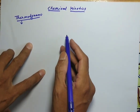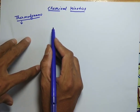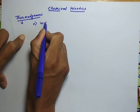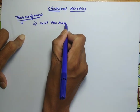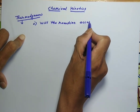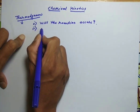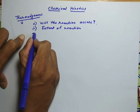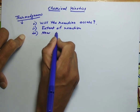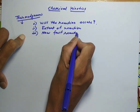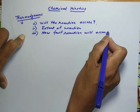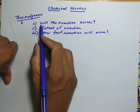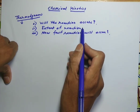Welcome friends, today we discuss about the topic chemical kinetics. When we want to bring any chemical reaction, we are interested in three different conditions: first, whether the reaction will occur or not; second, what is the extent of the chemical reaction; and third, how fast will it occur.